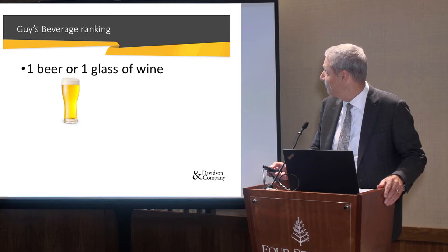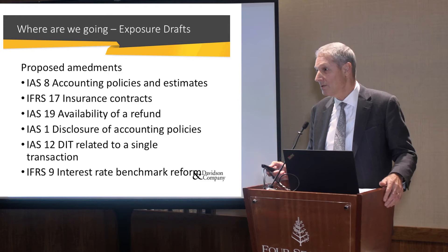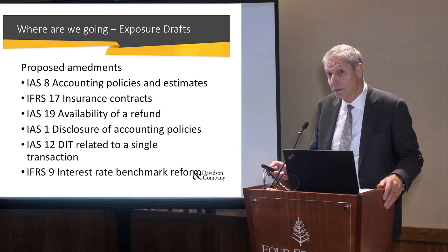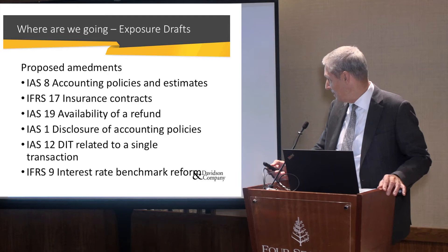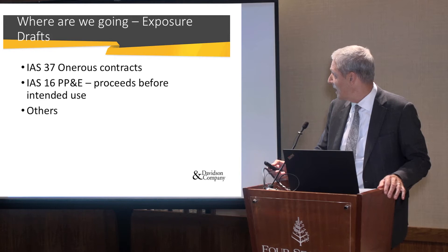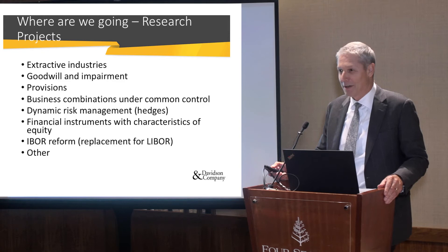Where are we going? Exposure drafts: there are a number of proposed amendments. After the eight-year workout of IFRS implementations, they took a bit of a vacation, but there's a lot in the hopper. These include accounting policies and estimates, insurance contracts, availability of a refund, disclosure of accounting policies, deferred income tax, interest rate benchmark reform, onerous contracts, proceeds before intended use, and others — probably a dozen in total. They're just waiting for us to absorb the current standards in our financial statements.